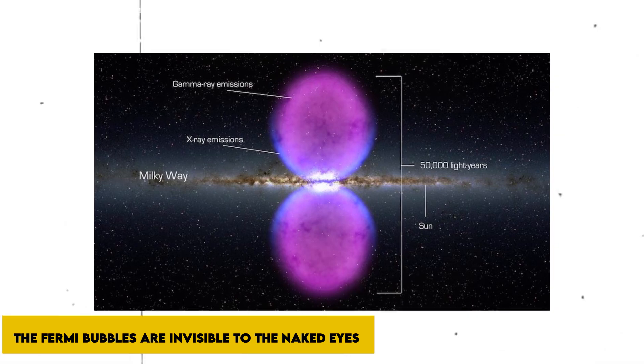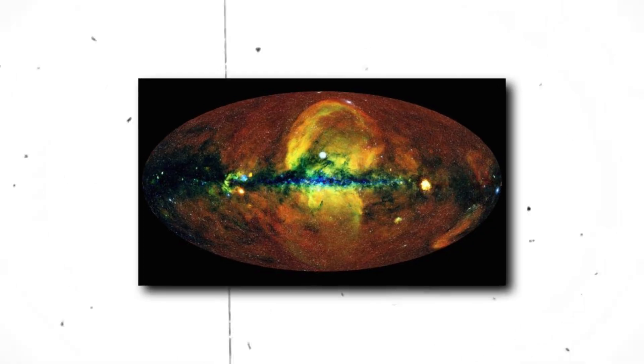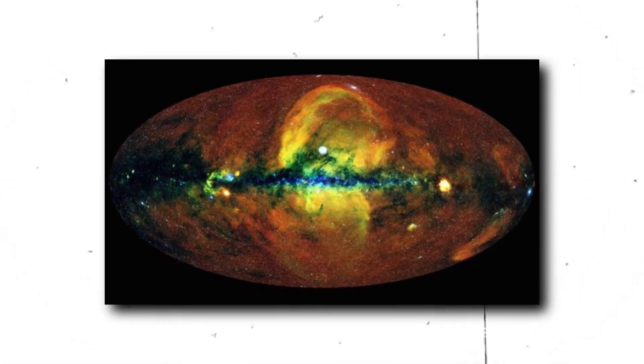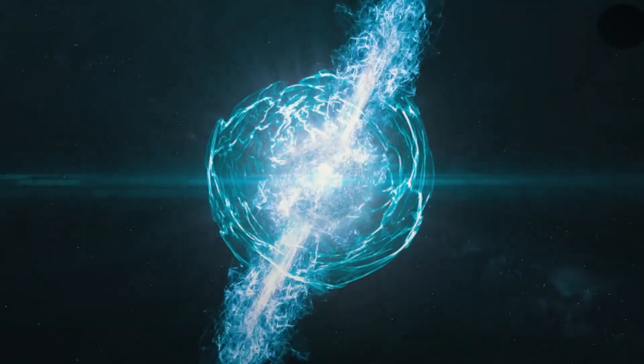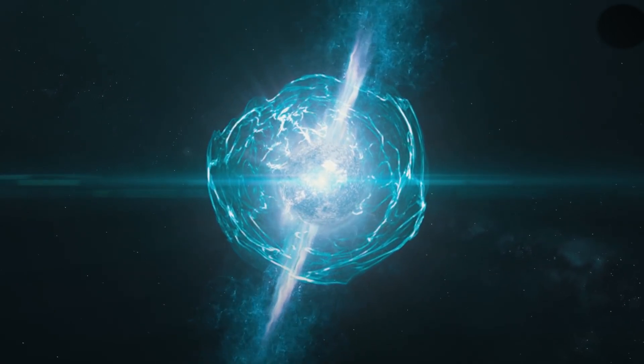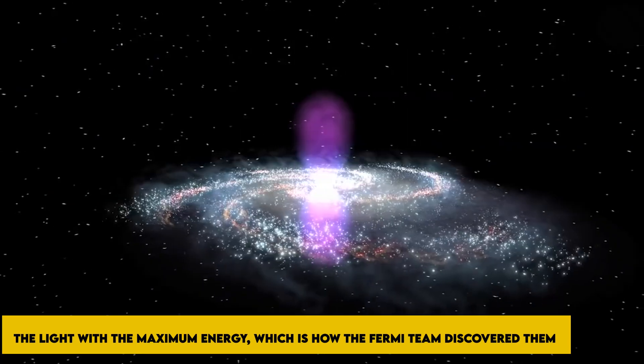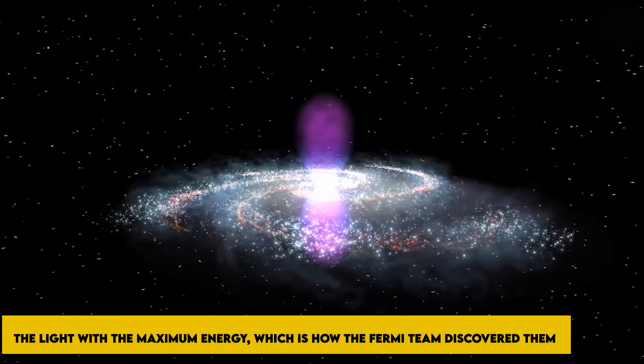The Fermi bubbles are invisible to the naked eye. They are nearly undetectable because the gas inside them is so thin, despite their tremendous temperatures. However, something in them has the ability to produce gamma rays, the light with the maximum energy, which is how the Fermi team discovered them.